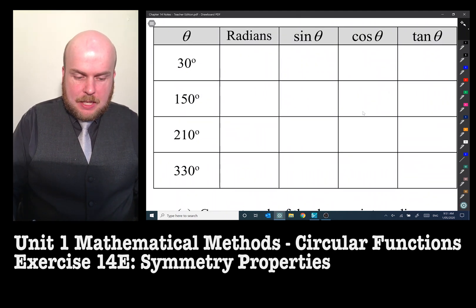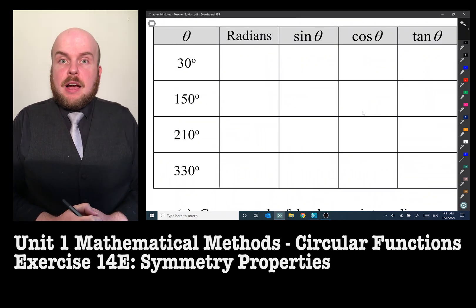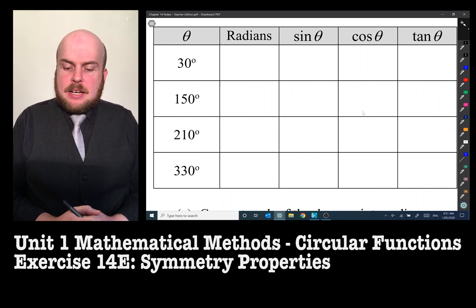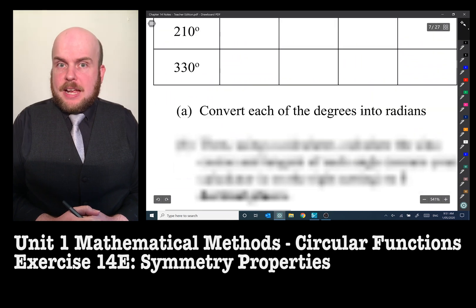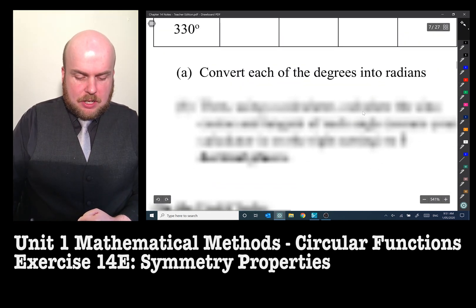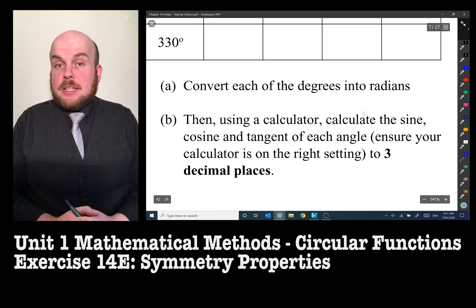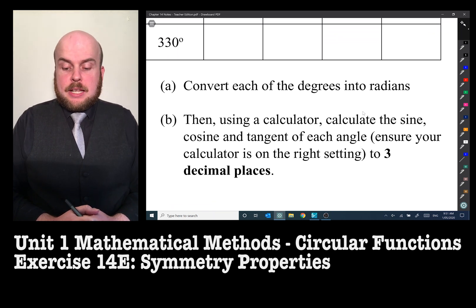As you can see, I've got all of the degrees mentioned there. I've got a gap for radians and then I've got the sine, cos, and tan of each. So what are the instructions? Convert each of the degrees into radians, then using a calculator, calculate the sine, cosine, and tangent of each angle. Ensure your calculator is on the right setting to three decimal places.